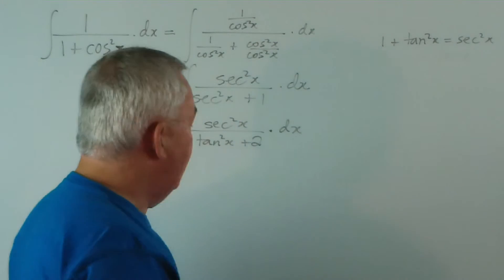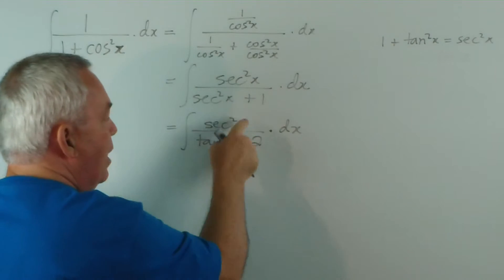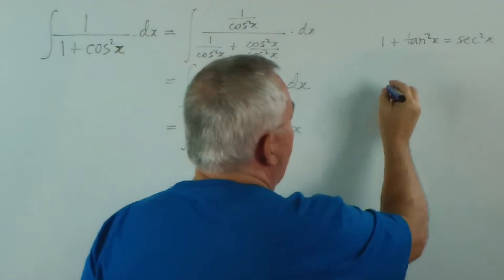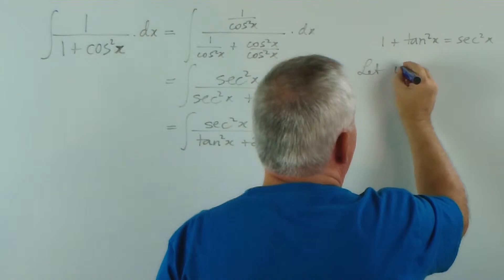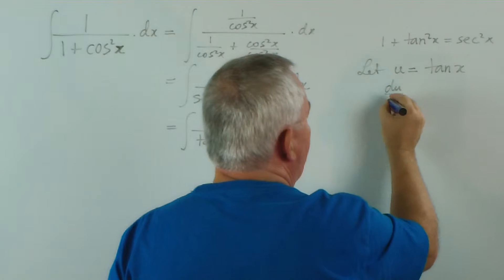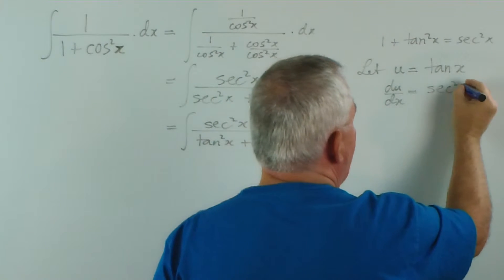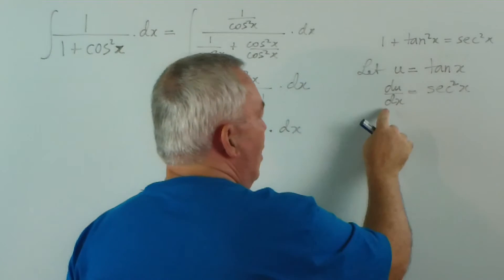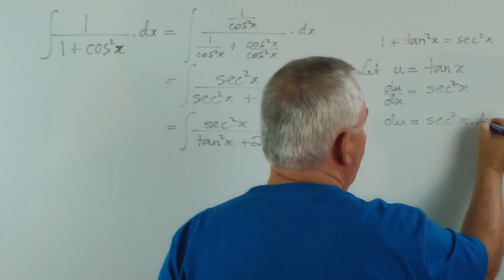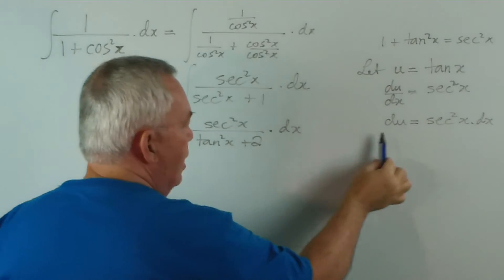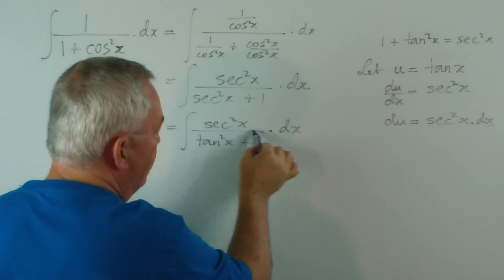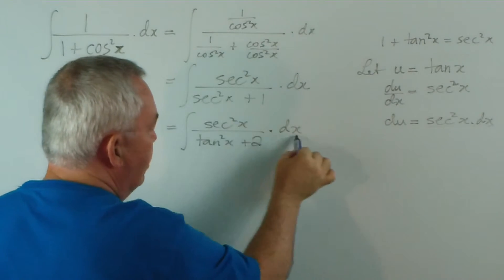And now we're going to make our substitution, because we have a tangent function here and its derivative here. Well, not the derivative of this function, but the derivative of the tangent. So here we go. We let u equal tan x, and we find the derivative, which is sec squared x. Multiplying both sides by dx, we get that. And as you can see, this expression here is exactly what we have here. sec squared x dx, sec squared x dx.